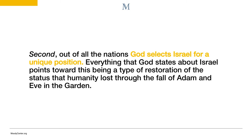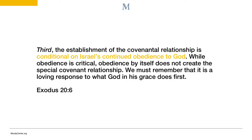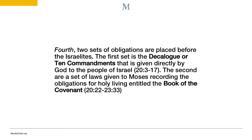Second, out of all the nations, God selects Israel for a unique position. Everything that God states about Israel points towards this being a type of restoration of the status that humanity lost through the fall of Adam and Eve in the garden. Third, the establishment of the covenant relationship is conditional on Israel's continued obedience to God. While obedience is critical, obedience by itself does not create the special covenant relationship. We must remember that it is a loving response to what God, in his grace, does first.